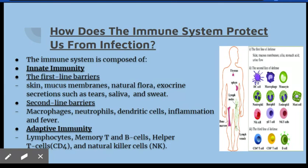The adaptive immunity is composed of lymphocytes that target and kill pathogens in a more specific and direct way, like for example producing antibodies for a specific pathogen. The adaptive immunity is a more specific type of immunity.